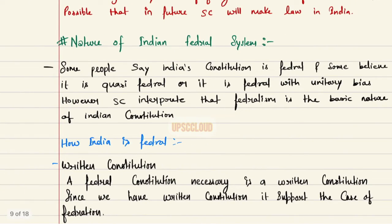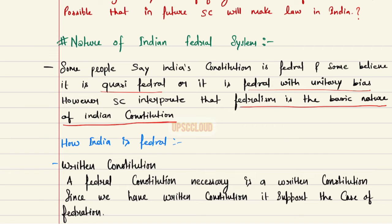In India, the judiciary is intervening in the work of the executive. A question for consideration: is it possible that in the future the Supreme Court will make law in India? Now, regarding the nature of the Indian federal system — some people say India's constitution is federal, and some believe it is quasi-federal or federal with a unitary bias.